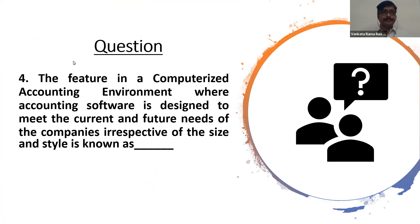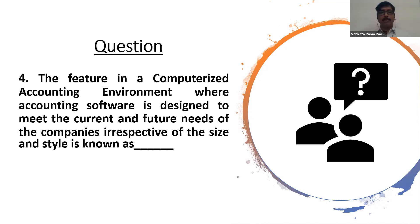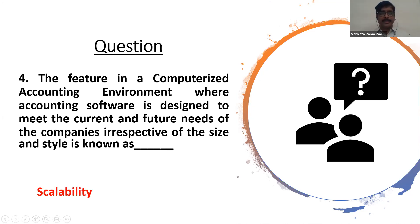Question four: The feature in a computerized accounting environment where accounting software is designed to meet the current and future needs of the company, irrespective of its size and style, is known as what? This is a very important concept — it also appears as a short-answer question. The answer is scalability.